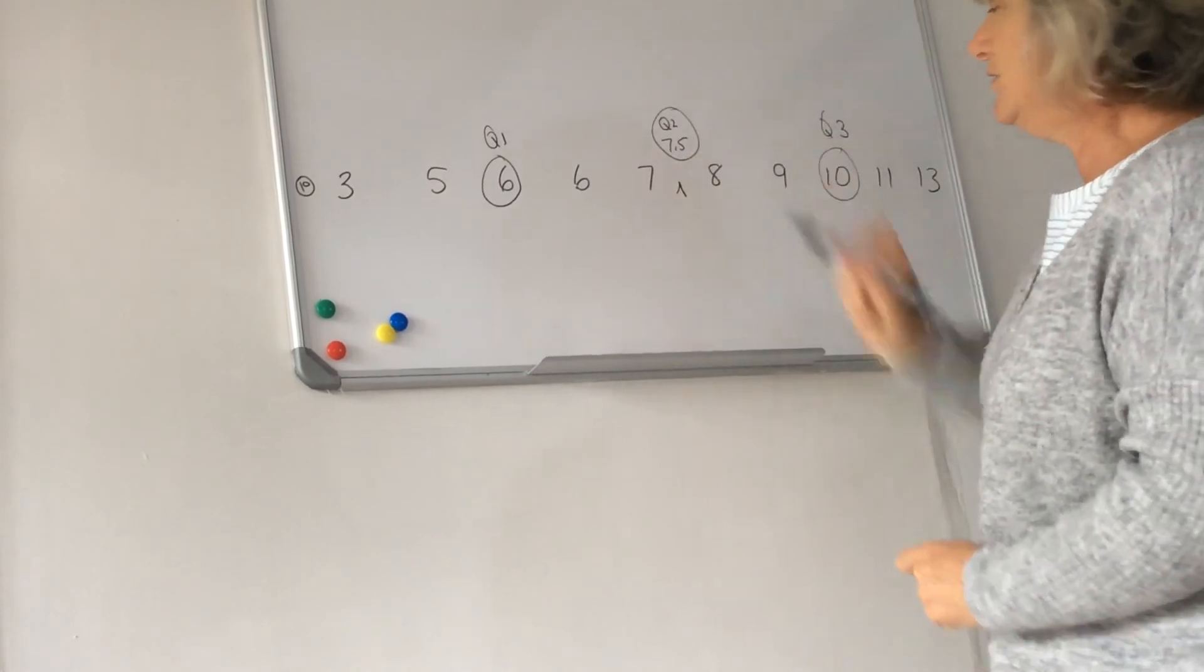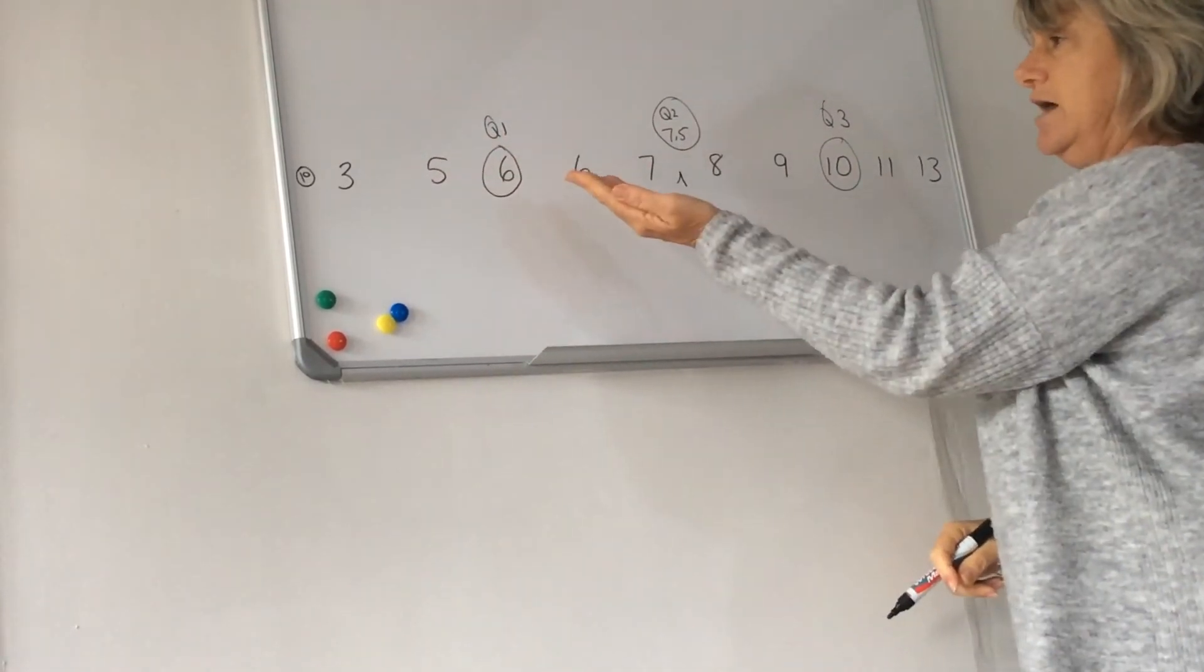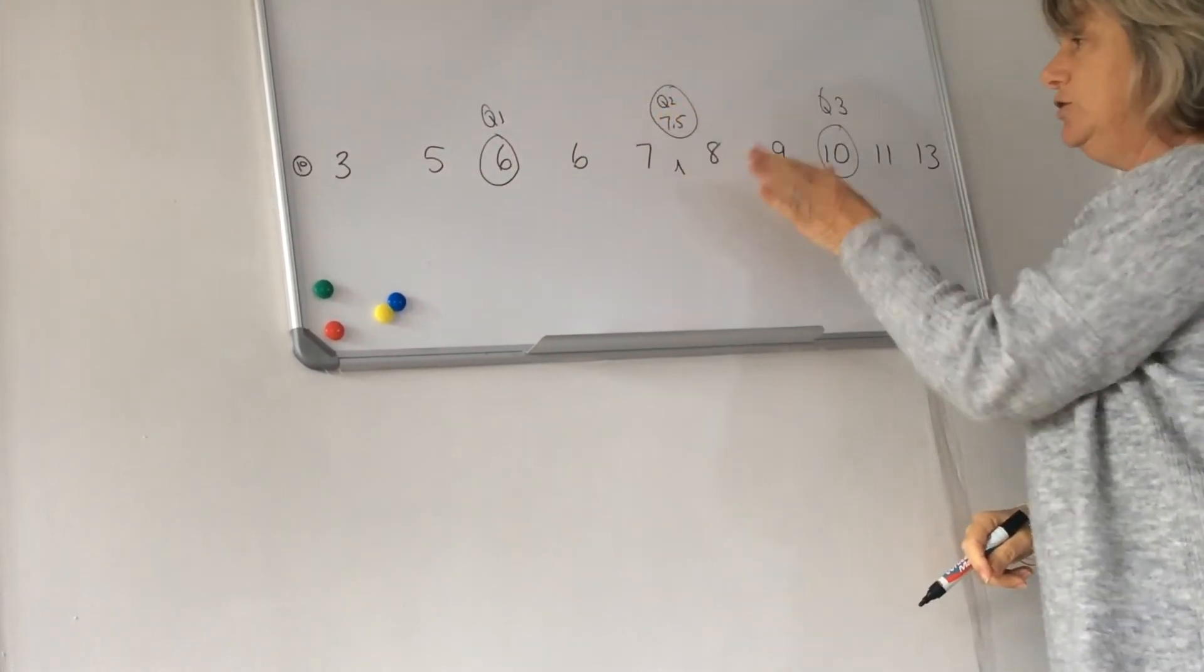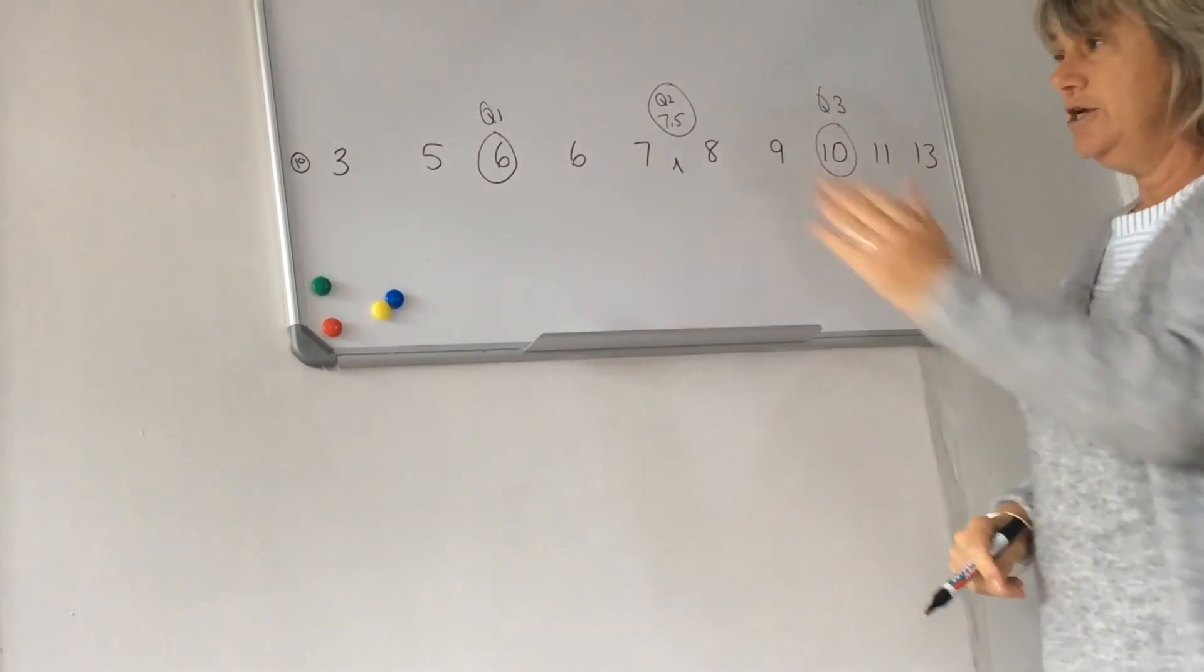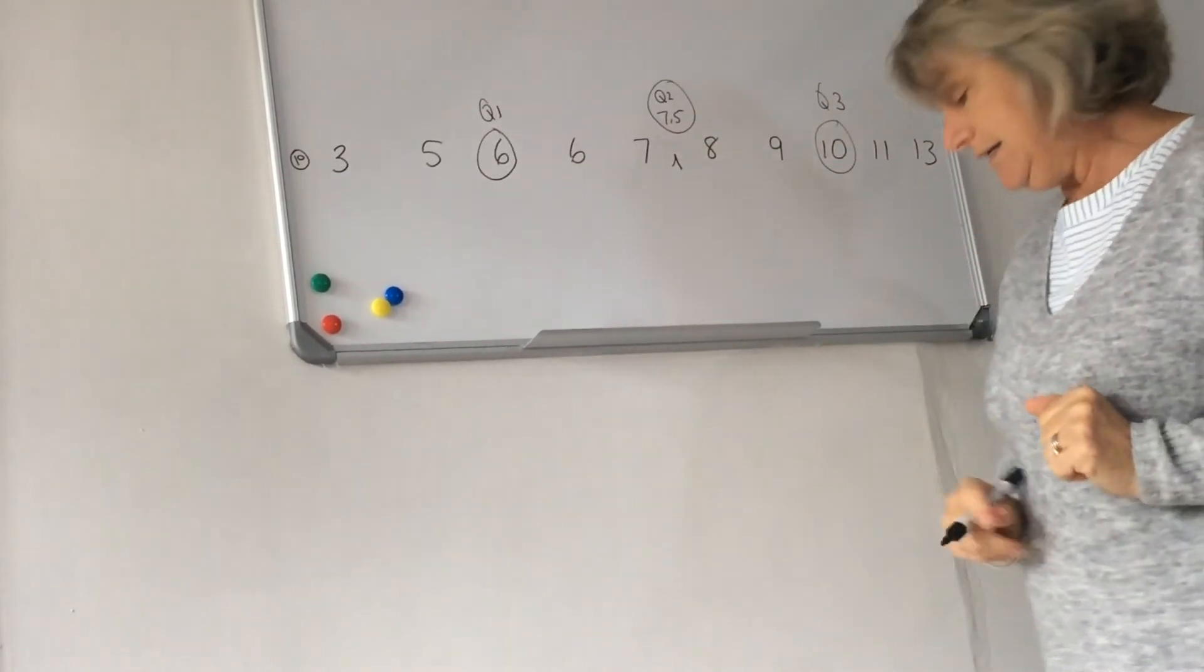So if we look at the data, we'll see two values, quartile one, two values, quartile two, two values, quartile three, and two values. The data set has been divided evenly.